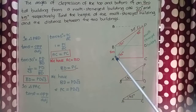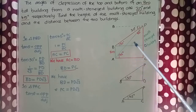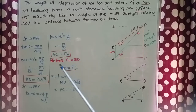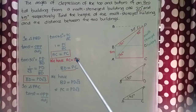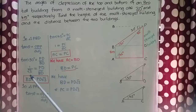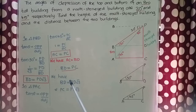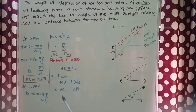Now, looking at the figure, AC and BD are equal. So we can write AC = BD. Therefore, in the expression BD = PD√3, we can replace BD with PC. So we get PC = PD√3.